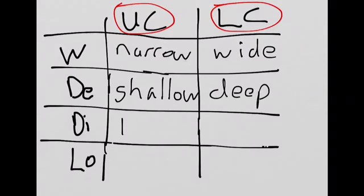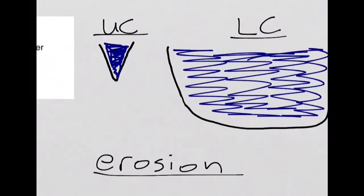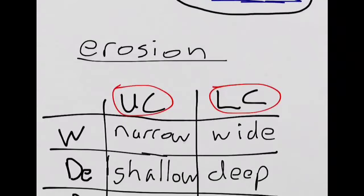Discharge is low at the upper course, and is high at the lower course. Discharge is the amount of water, or the volume of water. The figure for the upper course would be low, basically because the river is so narrow and shallow, and the figure for discharge would be high for the lower course because the river is so much wider and deeper, and can therefore hold so much more water.